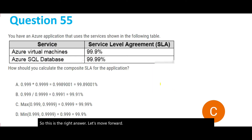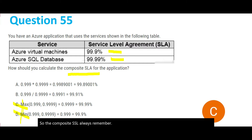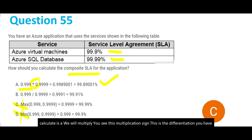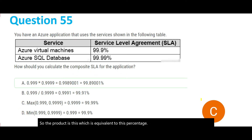This question discusses SLAs defined at the virtual machine and SQL database level, and asks how to calculate composite SLAs. For composite SLAs, we do not use min or max — that is not the correct method. The correct way is option A: we multiply. You have 99.9% (three nines) multiplied by 99.99% (four nines). The product gives you the composite SLA percentage. Please remember this formula — it is always a product.